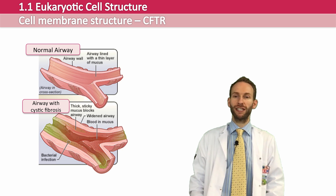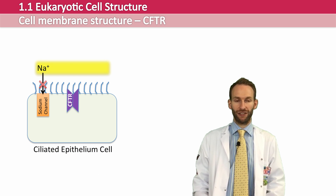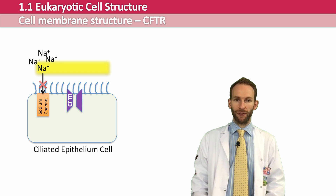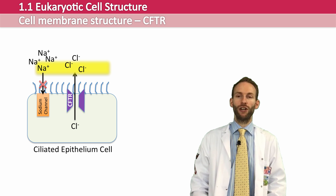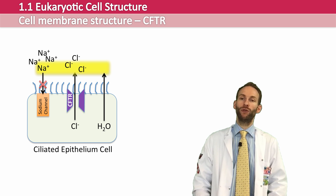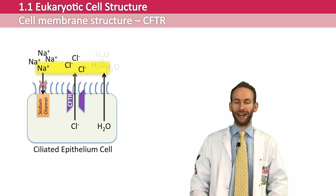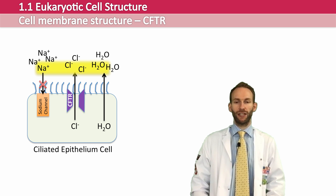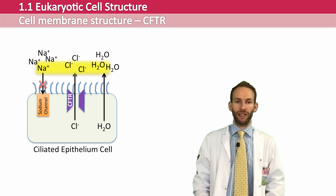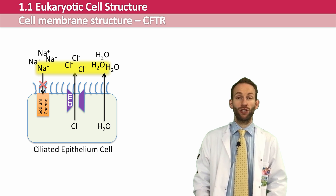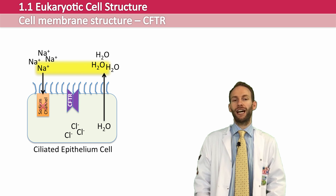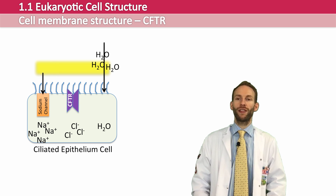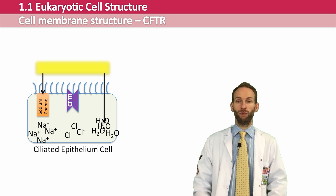The CFTR protein works by inhibiting the transport of sodium ions into the cell, so sodiums build up in the mucus. It also opens to allow chloride ions to pass out of the cell, which also build up in the mucus. Where you have lots of sodium and chloride — a very salty environment — water will move to that saltier region by osmosis, so water moves out of the cell and into the mucus, stopping it from getting too thick. If the mucus becomes too watery, the CFTR channel can close to stop chloride ions passing out, allow sodiums to move back in, and therefore water will move back in. So it can either open or close to control the levels of salt and water in the mucus.